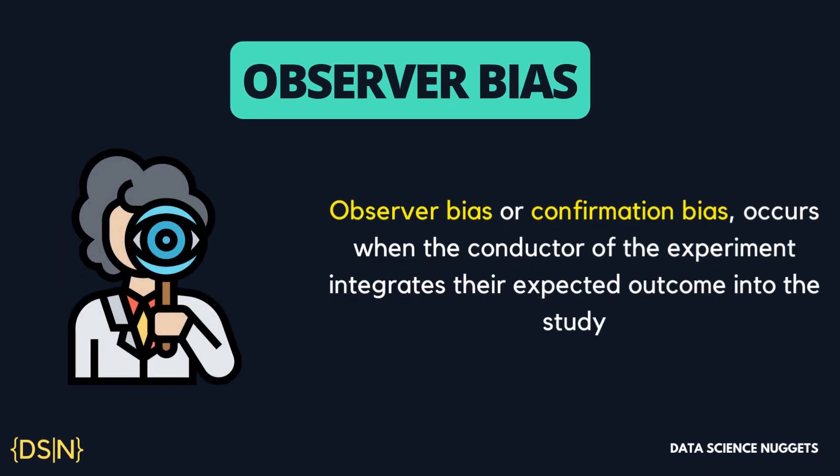Next is observer bias, also known as confirmation bias. This occurs when the conductor of the experiment integrates their expected outcome into the study. It can happen if a researcher starts a project with subjective thoughts about their study, knowingly or unconsciously. An example can be seen in data labeling tasks where one data worker chooses a different label based on their subjective thoughts, as opposed to other workers who follow the provided objective guidelines. Imagine the guidelines suggest that all tomato images should be tagged as food, yet one labeler believes it should be classified as a vegetable and labels it accordingly — this will result in inaccurate data.